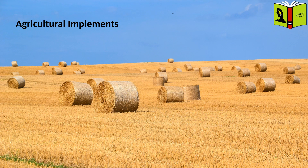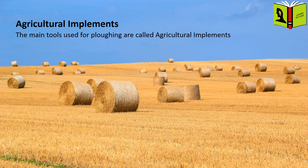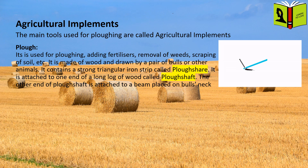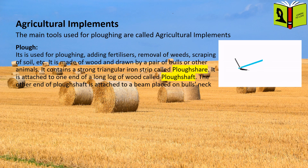Agricultural Implements. The main tools used for plowing are called agricultural implements. Plow. It is used for plowing, adding fertilizers, removal of weeds, scraping of soil, etc. It is made of wood and drawn by a pair of bulls or other animals. It contains a strong triangular iron strip called plowshare. It is attached to one end of a long log of wood called plowshaft. The other end of the plowshaft is attached to a beam placed on the bull's neck.